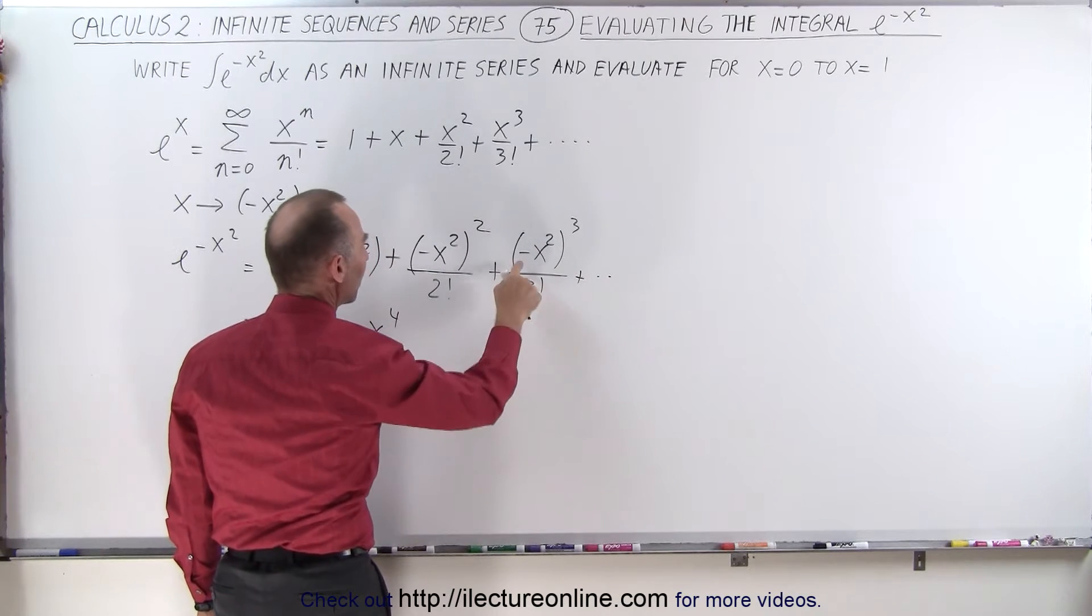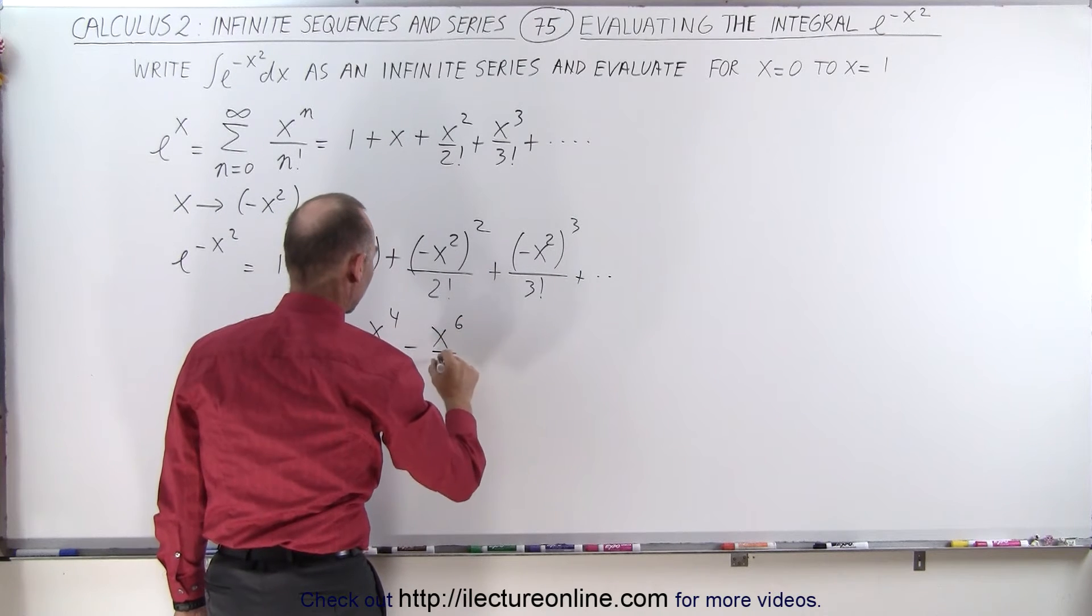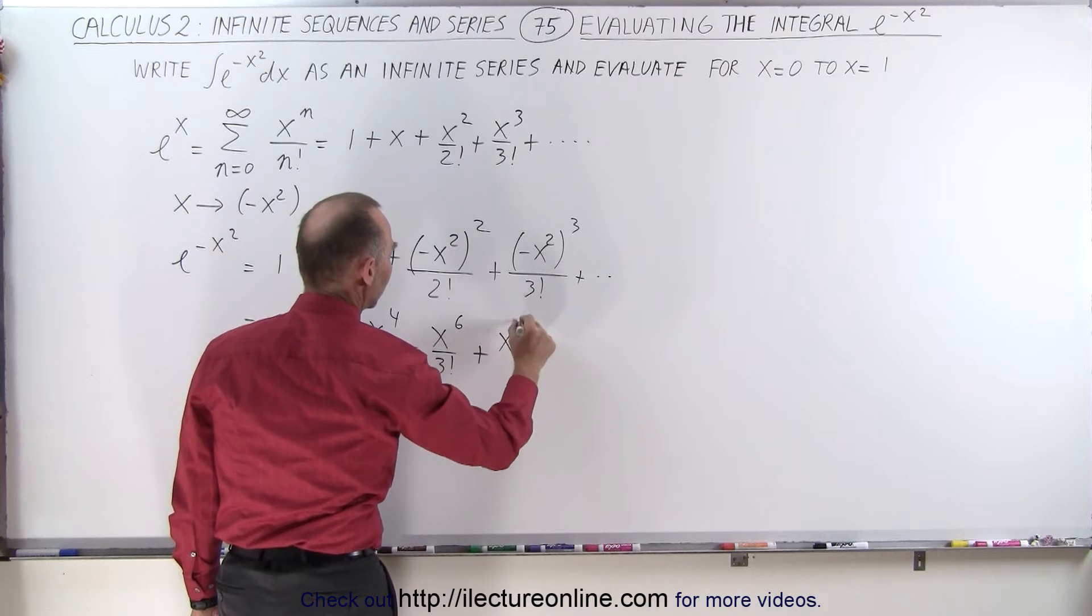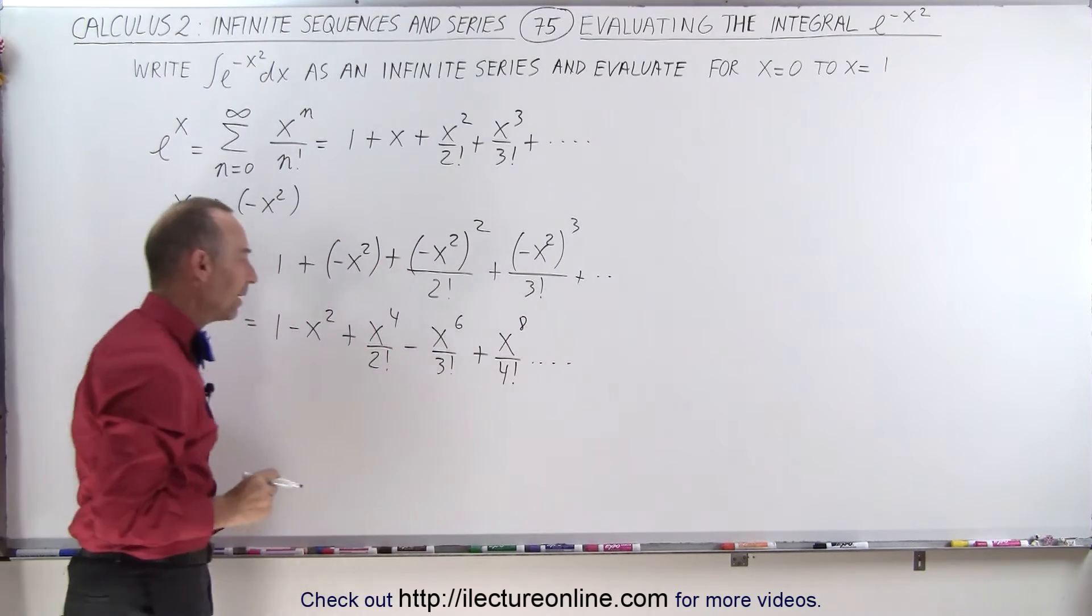that's going to be minus because we have minus 1 cubed, so minus x to the sixth over 3 factorial, and that would be plus x to the 8 over 4 factorial, and I think we can see the pattern now.